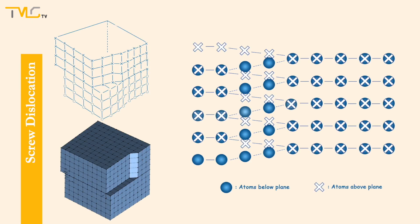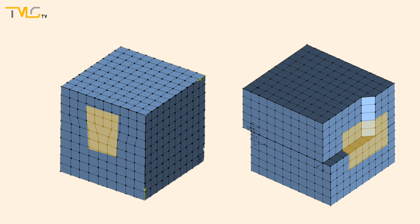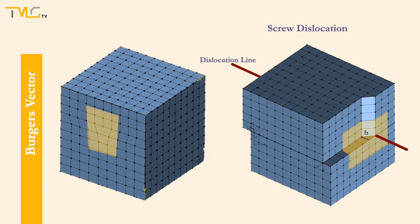Another type of dislocation is the screw dislocation, in which the top half of the crystal shifts to the side by one atomic distance. Screw dislocations make that section of the crystal look similar to a metal showing shear deformation. The direction and the magnitude of the lattice distortion introduced to the crystal by a dislocation is shown by Burgers vector, denoted by lowercase b. When the dislocation line is parallel to the Burgers vector, it is called a screw dislocation, and it is called an edge dislocation when perpendicular. Keep in mind that the deformation processes of materials strongly depend on the dynamics of the dislocation motions.